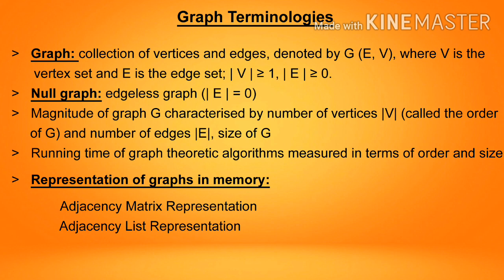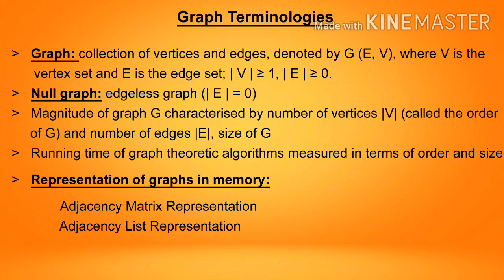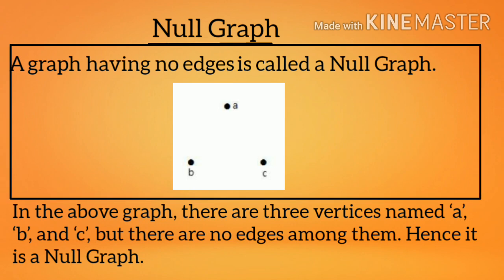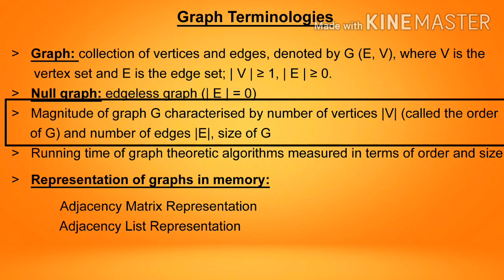Graph terminologies: a graph is a collection of vertices and edges, where V is the vertex set and E is the edge set, with V ≥ 1 and E ≥ 0. A null graph or edge-less graph has E equal to 0 — a graph having no edges. In the above graph there are three vertices named A, B, and C, but there are no edges among them, hence it is a null graph.